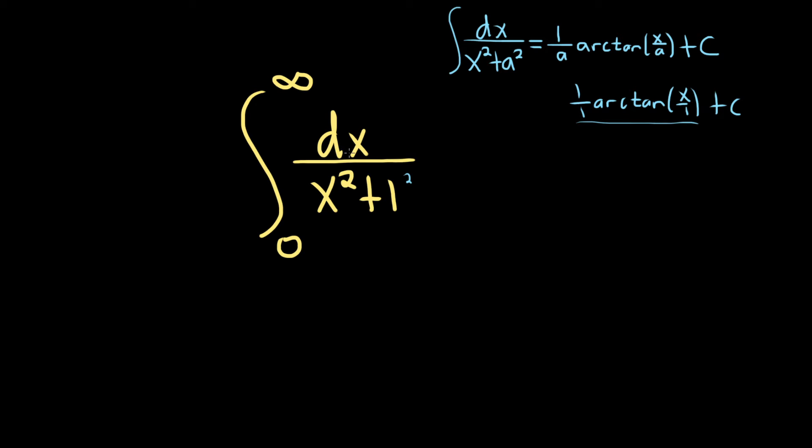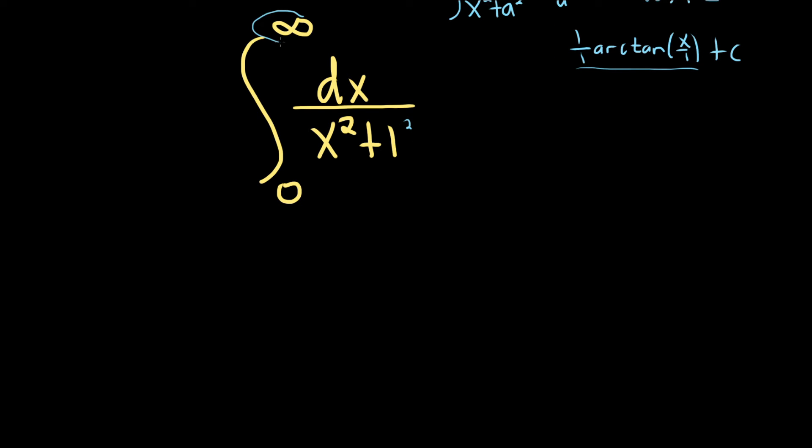Let's go ahead and integrate this. Now, because there's an infinity here, the way you do this is you replace the infinity with a variable. I like to use little b. And then you take the limit as b goes to infinity. And then we have dx over x squared plus 1.